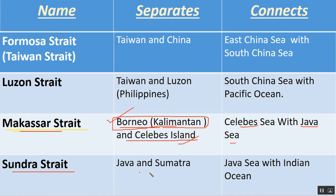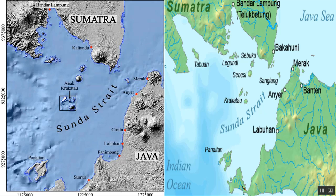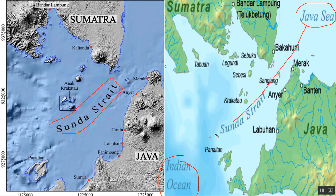The Sunda Strait separates Java from Sumatra and connects the Java Sea with the Indian Ocean. It connects the Indian Ocean with the Java Sea, separating the regions of Sumatra and Java.